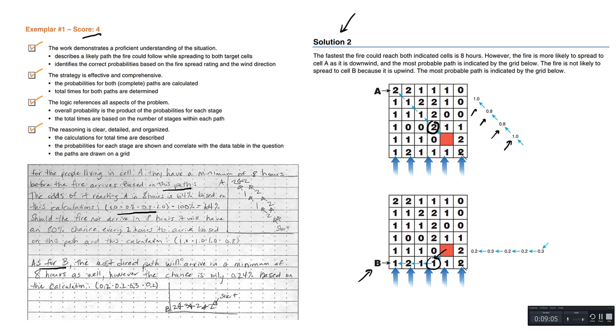So they're also considering for the other possible cell B catching on fire here. The most direct path will arrive in a minimum of eight hours as well. However, the chance is only 0.24% based off the calculation. So this answer is quite simplistic, but nonetheless, the student was awarded a four out of four.